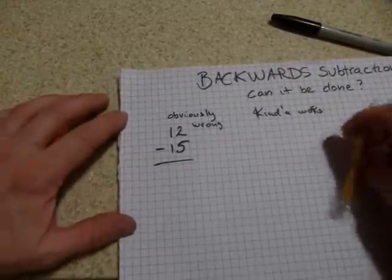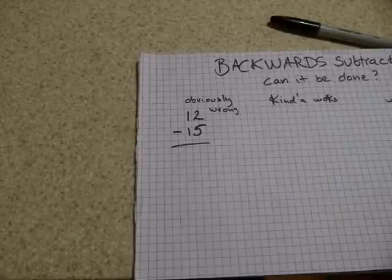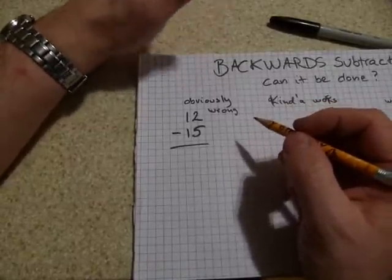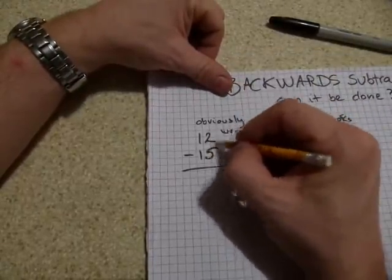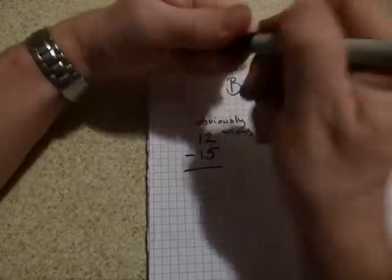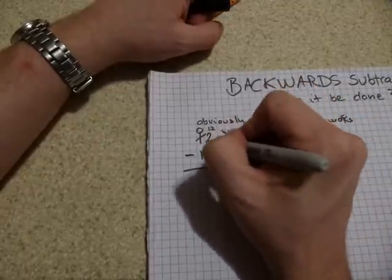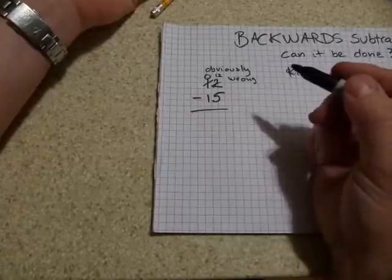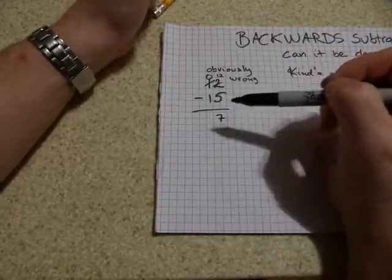Now, 'obviously wrong' — we'll just follow the steps. 12 minus 15: the correct answer is obviously minus 3. But what do we get if we just follow the steps without any thinking? We cannot take away 5 from 2, so we have to borrow from the tens. We trade up the tens column — it becomes a zero — and we have 12 ones in the ones column. 12 minus 5 can be done, and you have 7 here.